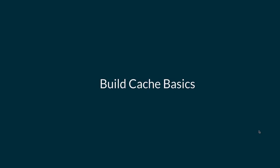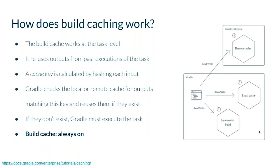So, build cache basics — what is the build cache and how does it work? At a high level, the Gradle build cache is almost like an extension of incremental build — those up-to-date checks you see on your build. Whenever you ask Gradle to invoke a task like clean, check, test, or build, it looks at all the inputs to that task, computes a hash of those inputs, and creates what is called a cache key from those hashes.